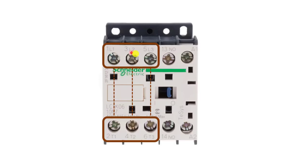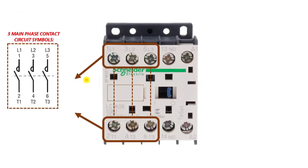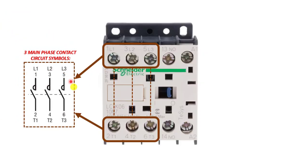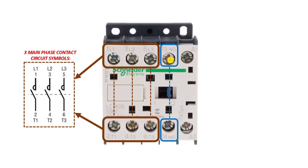The electrical circuit symbol shows three open main contacts. The input phases are L1, L2, L3 and the output phases from the contactor are T1, T2, T3. We also have an auxiliary contact. This auxiliary contact is marked NO, meaning normally open — this is our open auxiliary contact.